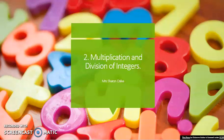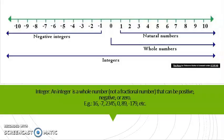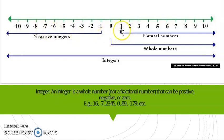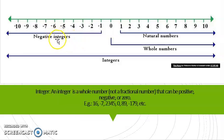I hope you remember what integers are from your previous class. An integer is a whole number, not a fractional number, but an integer can be positive, negative, or zero. Here you have the number line for reference — zero in the middle, positive integers on the right-hand side and negative integers on the left-hand side. Numbers from 1, 2 to infinite are called natural numbers. When you include zero, you get whole numbers. Together, negative integers and whole numbers are called integers.